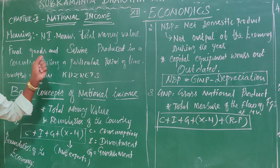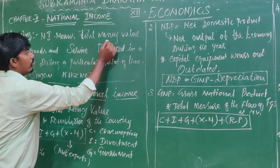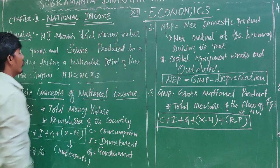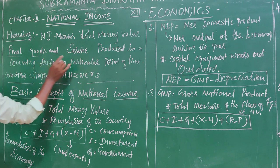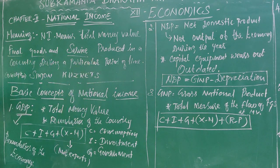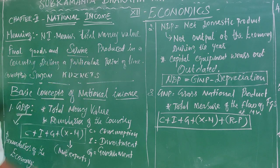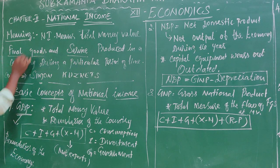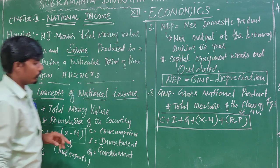There are two key words here: money value, and final goods and services. What is goods value? What is money value? That is the overall final goods value.